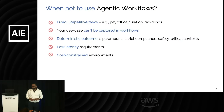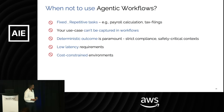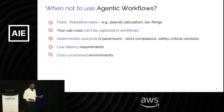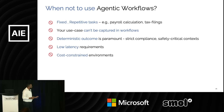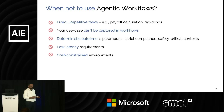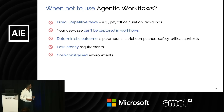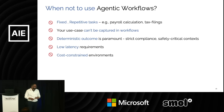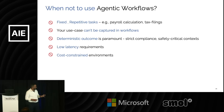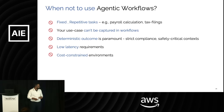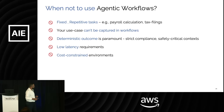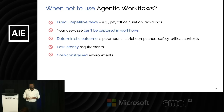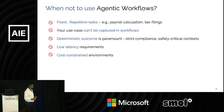When should you not use agentic workflows? For fixed and repeated tasks, just go with ETL pipelines. If your use case cannot be captured in workflows, agentic workflows probably won't work either. If a deterministic outcome is paramount — in strict compliance or safety-critical contexts — you should not use agentic workflows. And in low-latency, cost-sensitive environments, you should also probably avoid them.